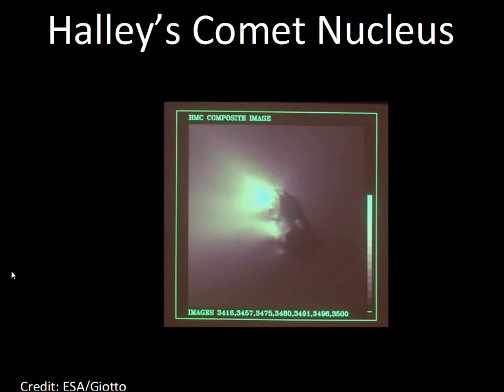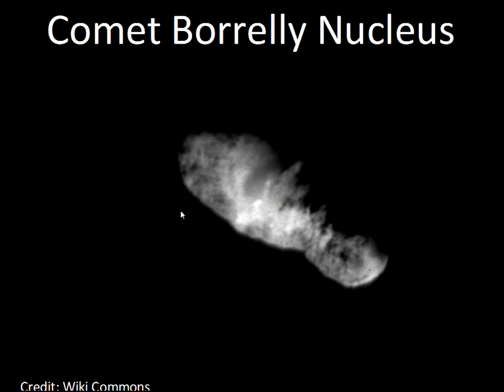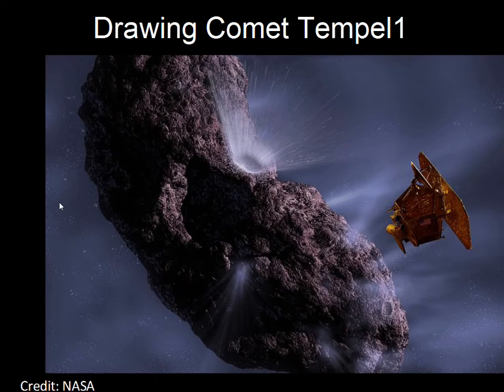Halley's Comet has been visited by a spacecraft — the European Space Agency's spacecraft flew by and took photos of the nucleus. From Earth we can't see the nucleus because it's too small, and when the comet is near the Sun, the coma obscures the view. There have been other comets visited as well: Comet Borrelly and Comet Wild 2.